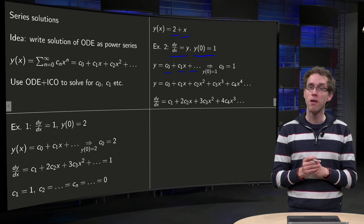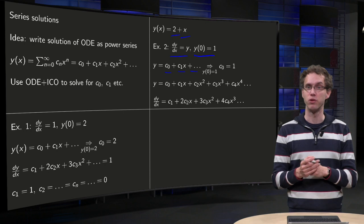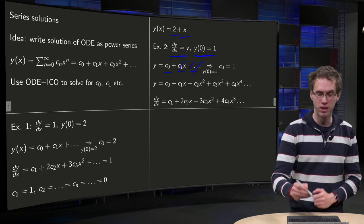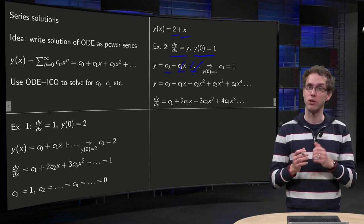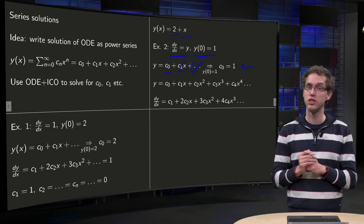And first of all we can use the initial condition, y(0) equals 1, if you plug in x equals 0, everything drops out, and you only have your c0 left, so y(0) equals c0 equals 1, so that gives you your c0.